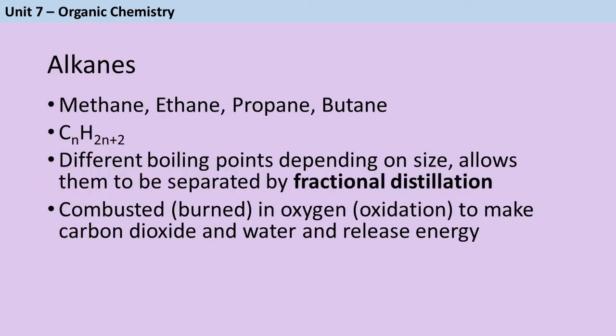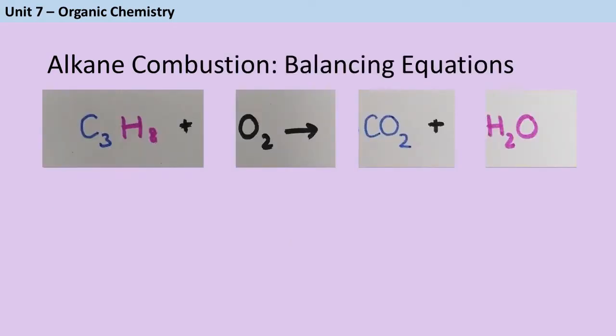One of the major uses of alkanes is combusting them as fuels, and when we do that, we release carbon dioxide and water, and we also release energy. You do need to be able to write balanced symbol equations for this, but it is not nearly as hard as it looks. So basically you're going to start off with the formula of an alkane, and you're going to add oxygen, and we don't know at the start how much oxygen that will be. We know that we're going to make carbon dioxide and we know that we're going to make water.